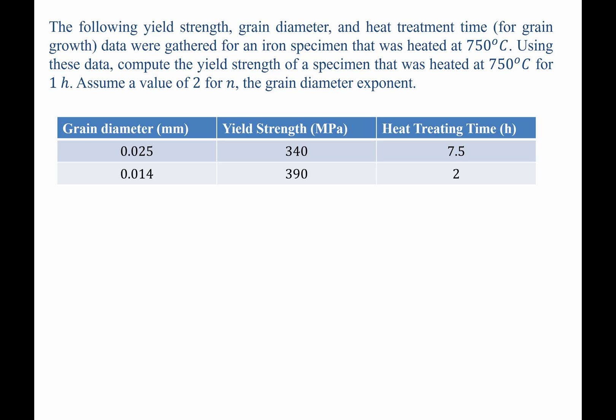The following yield strength, grain diameter, and heat treatment time for grain growth data was gathered for an iron specimen that was heated to 750 degrees Celsius. Using this data, compute the yield strength of a specimen that's been heated to 750 degrees Celsius for one hour.